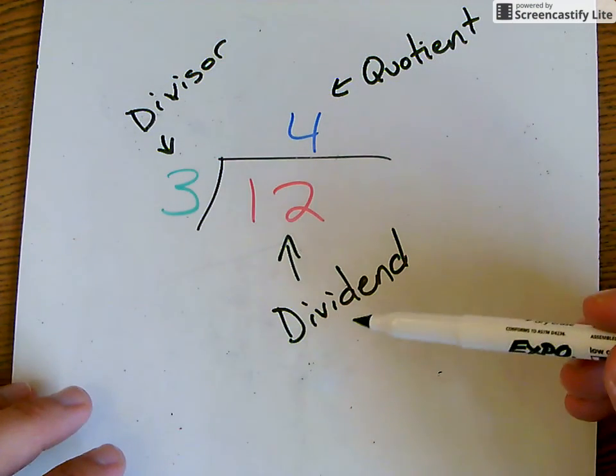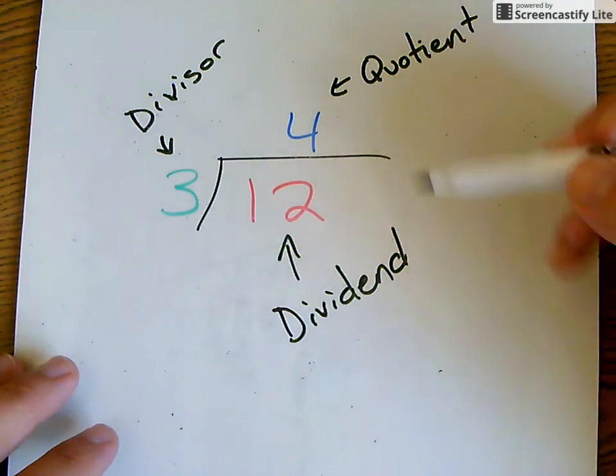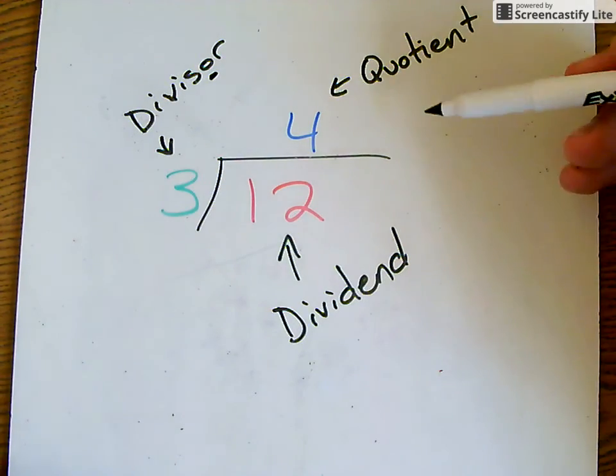And kind of an easy way to remember when you see things like this is dividend. When you say dividend it almost sounds like you're saying divide-in, so it's inside the box. Divisor, there's an O to it, so that can mean outside the box. Quotient, not really an easy way to remember that, but quotient is the answer to a division problem.